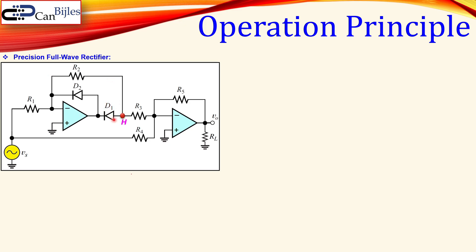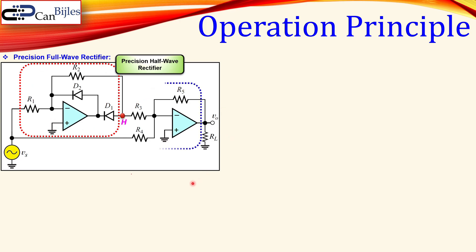Let me first denote the node here as H in order to discuss this clearly. We have this part which is our precision half wave rectifier, now here in combination with our inverting summing amplifier. So our signal at node H, which is the output of the precision half wave rectifier, will be summed together with this source voltage directly using these three resistors.